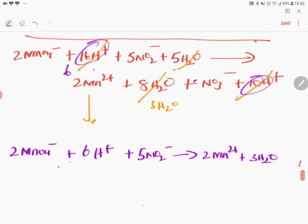That's all. Mn2 plus, 3 H2O, 5 NO3, gone. That's all. So all the products we have written. So this is one of the way of balancing. Now once again cross check all the charges.